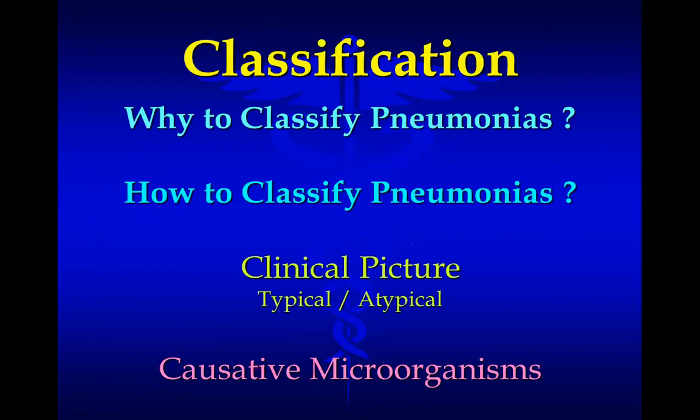It is important to classify pneumonias. Classification helps us in management — specifically in knowing what antimicrobial therapy to use, especially in bacterial pneumonias. So we need a logical classification system that helps define treatment.